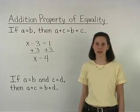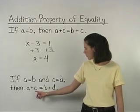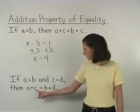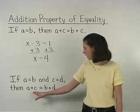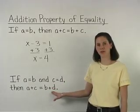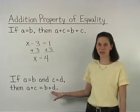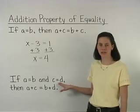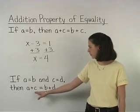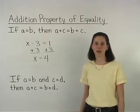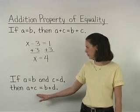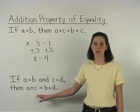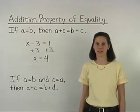It's important to understand that while it looks like we're adding different quantities to each side of the equation, C on one side and D on the other, remember that we were given that C equals D. So we're actually adding the same quantity to each side of the equation. Therefore, this also represents the addition property of equality.